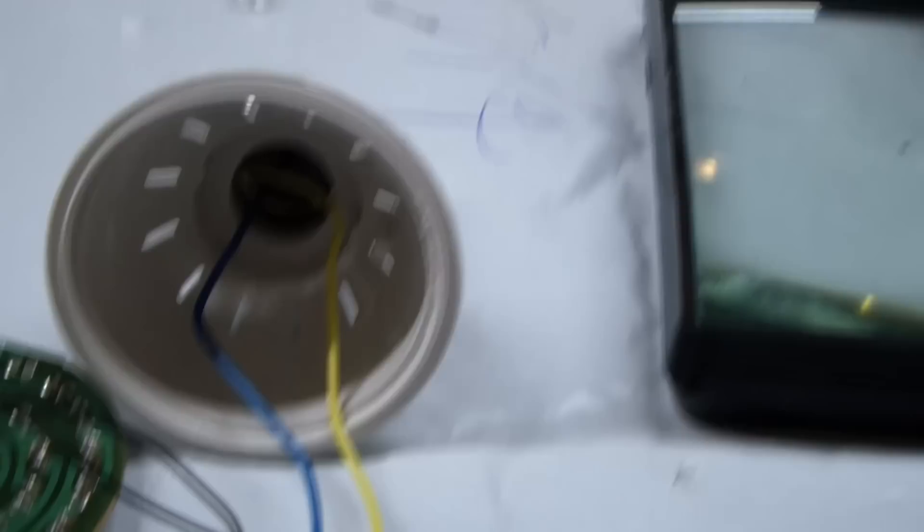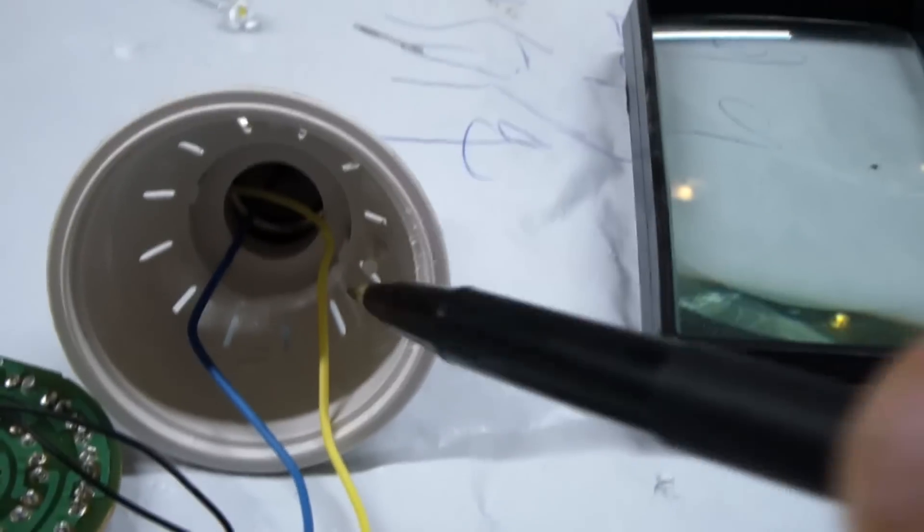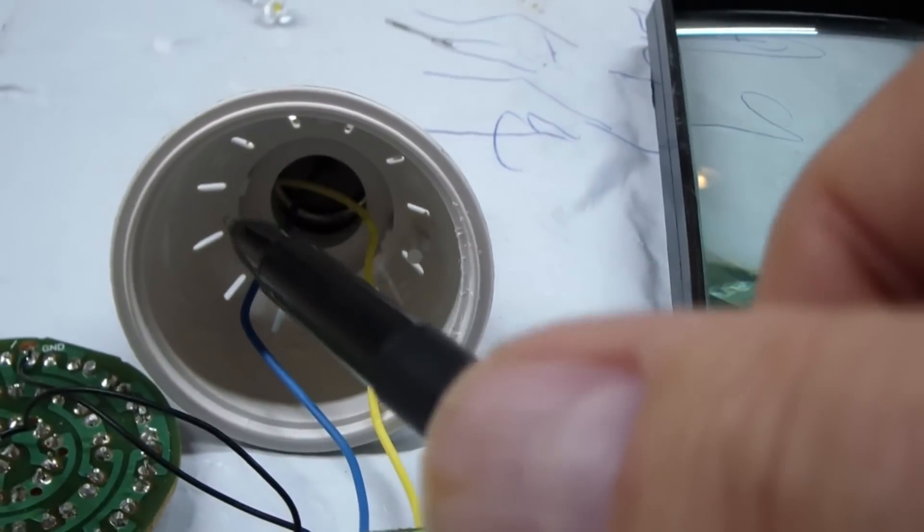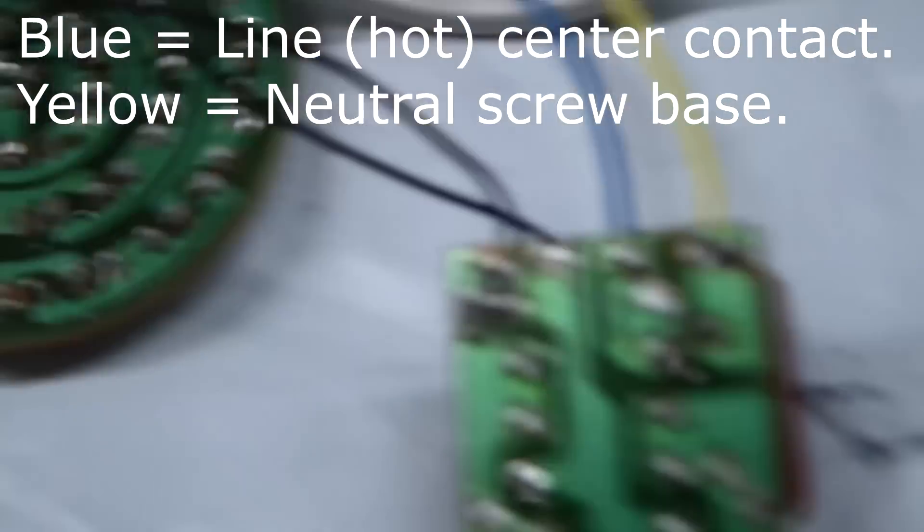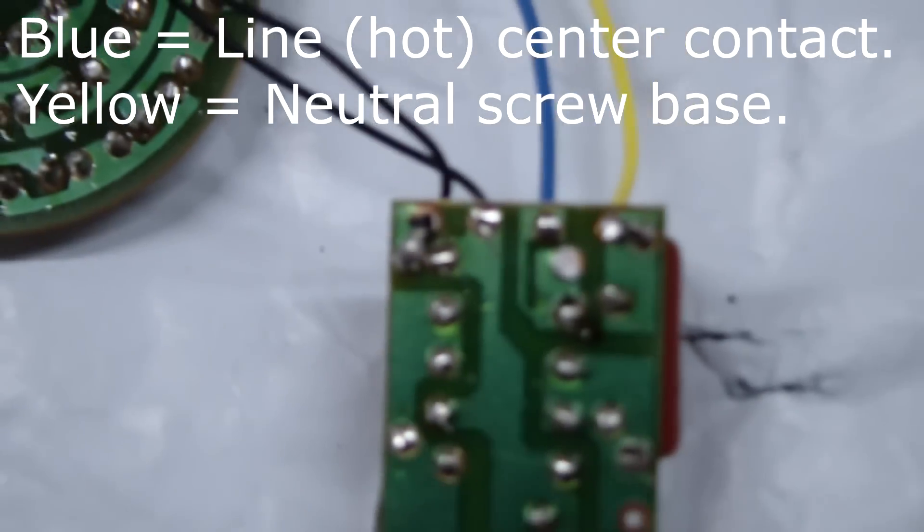Here we have the AC lines coming out of the socket. You notice that the blue line is the one that goes to the center, and the yellow line is the one that goes to the outside.